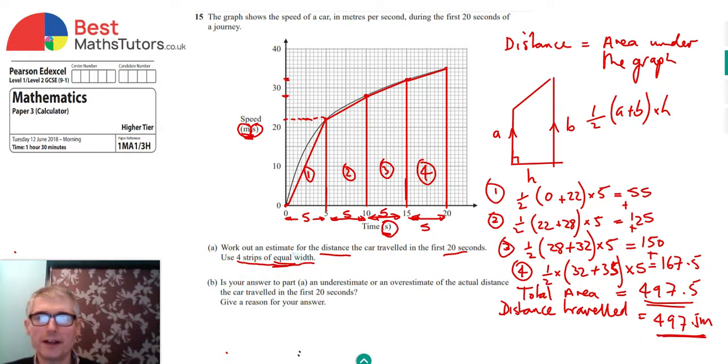So that's part A done. We're now going to look at part B. So it's saying, is our answer to part A an underestimate or an overestimate of the actual distance that the car traveled in the first 20 seconds? And we've got to give a reason for our answer as well.